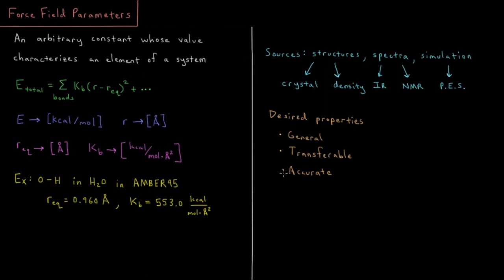And then lastly, we desire that they would be accurate. So whatever type of property that we're hoping to reproduce in a simulation, we would hope that our choice of parameters is such that whatever properties we desire to simulate, we're going to be able to do so with some type of high degree of fidelity to the original chemical system that we're trying to model.